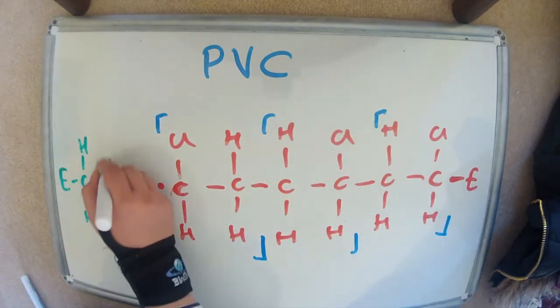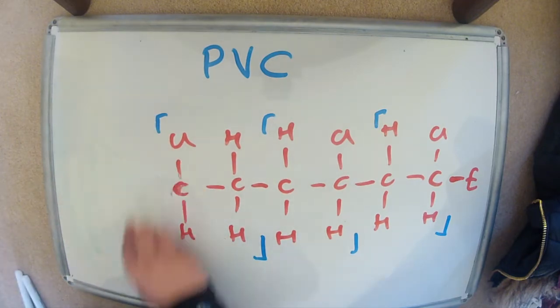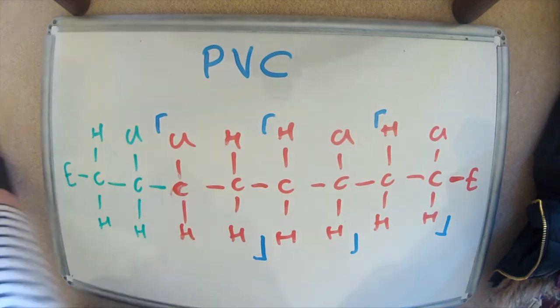Now then termination, which is the ending of it, can happen in two ways. The first way is when you have two polymers and the radicals just each donate its electron and form a bond.